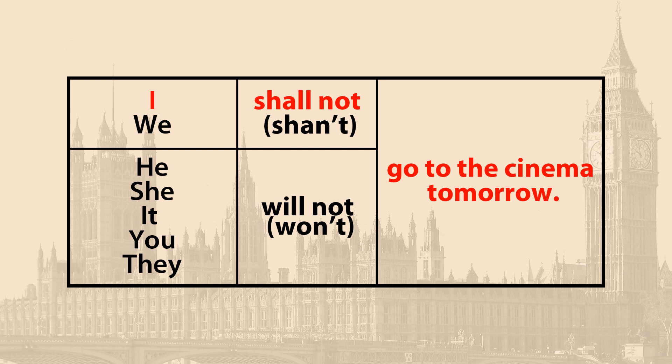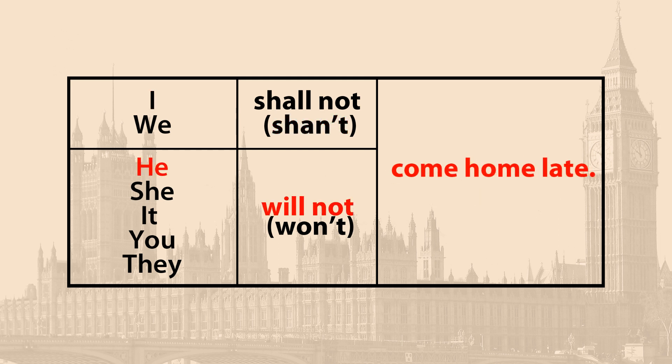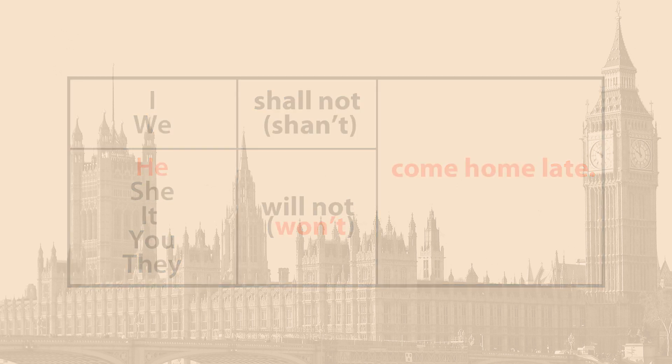I shall not go to the cinema tomorrow. Or: I shan't go to the cinema tomorrow. He will not come home late. He won't come home late. Не забывайте о том, что в современном английском языке существует тенденция употреблять will со всеми лицами, хотя shall тоже возможно. Например: I will go to the cinema или I shall go to the cinema.